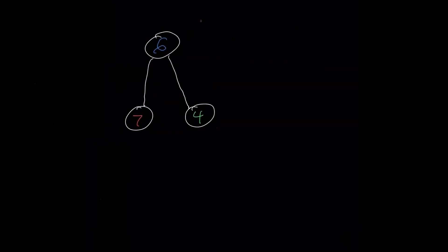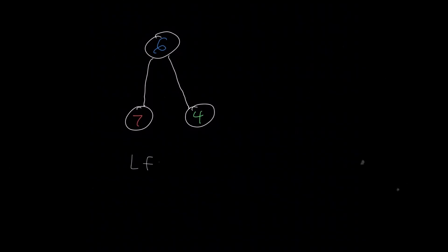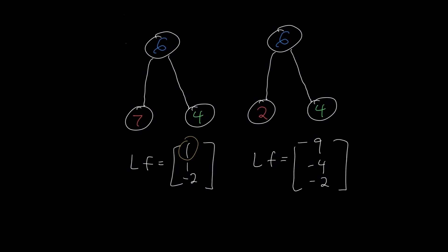The more similar a node is to the sum of its neighbors, the lower the value of LF is for that node. The less similar a node is, the higher this value.